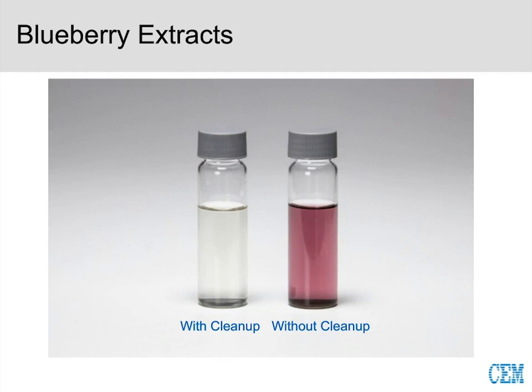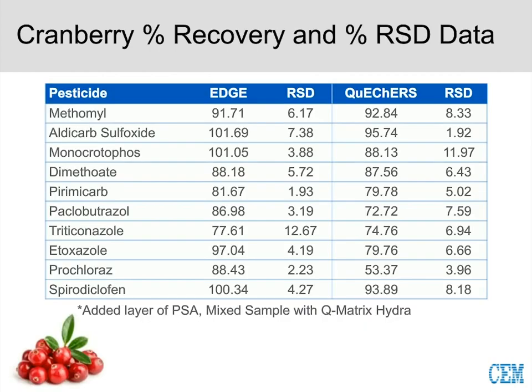The final matrix is cranberries — and as this webinar falls at the start of the holiday season, cranberries are a fitting, festive sample. We weren't sure how cranberries would behave, but it turned out that combining what we learned from avocado and blueberries was the answer: we needed to both pre-mix the sample with Q-Matrix Hydra and add a layer of PSA. The PSA sits right on top of the Q-Matrix Hydra, and when you pre-mix, the PSA and Q-Matrix Hydra mix together. The same story holds — we get better recoveries than compared to QuEChERS for cranberries.